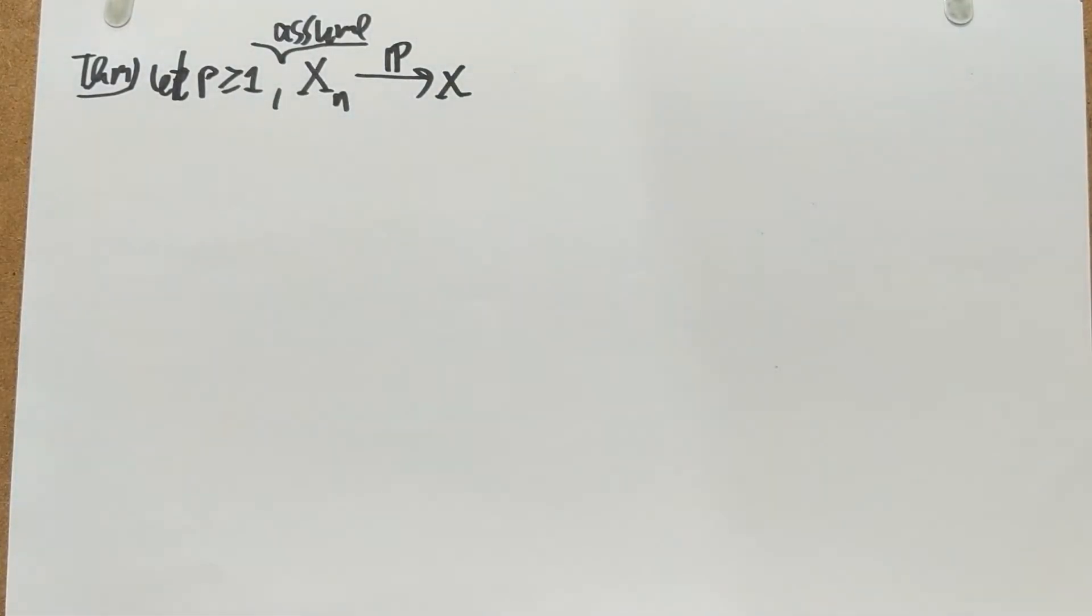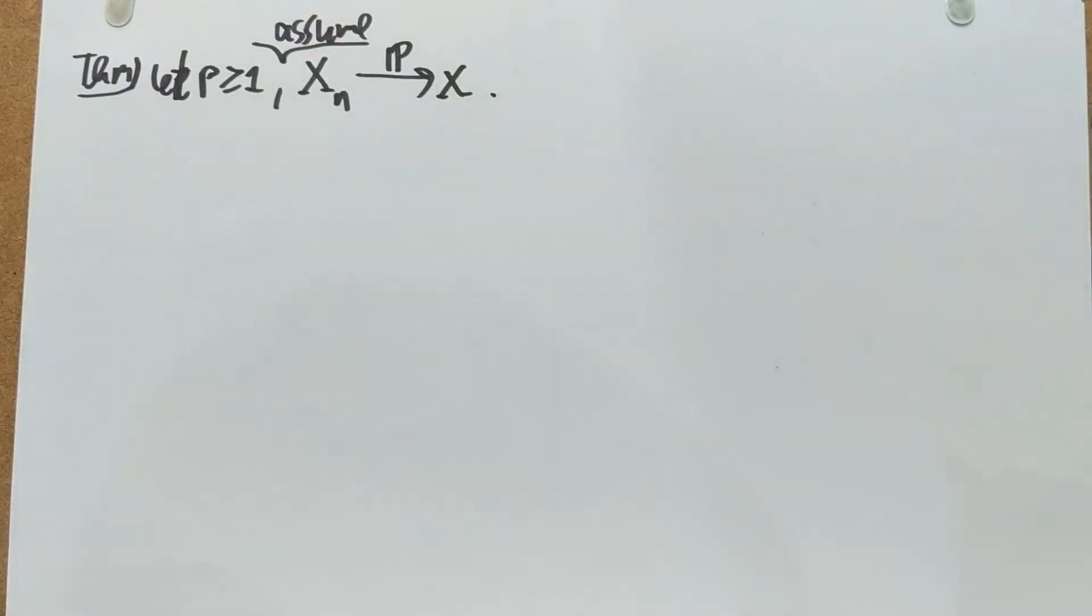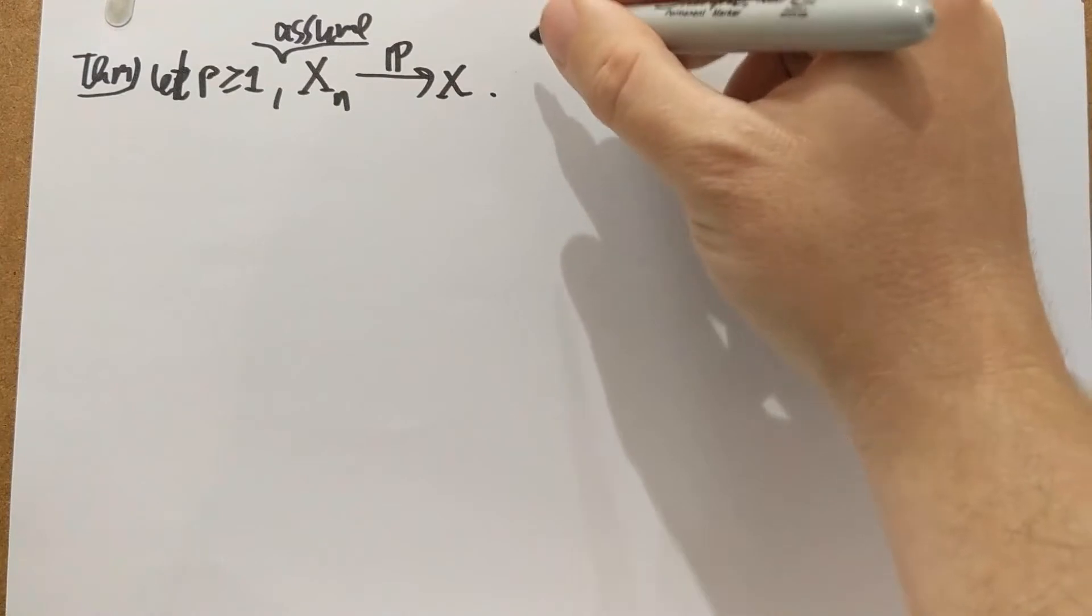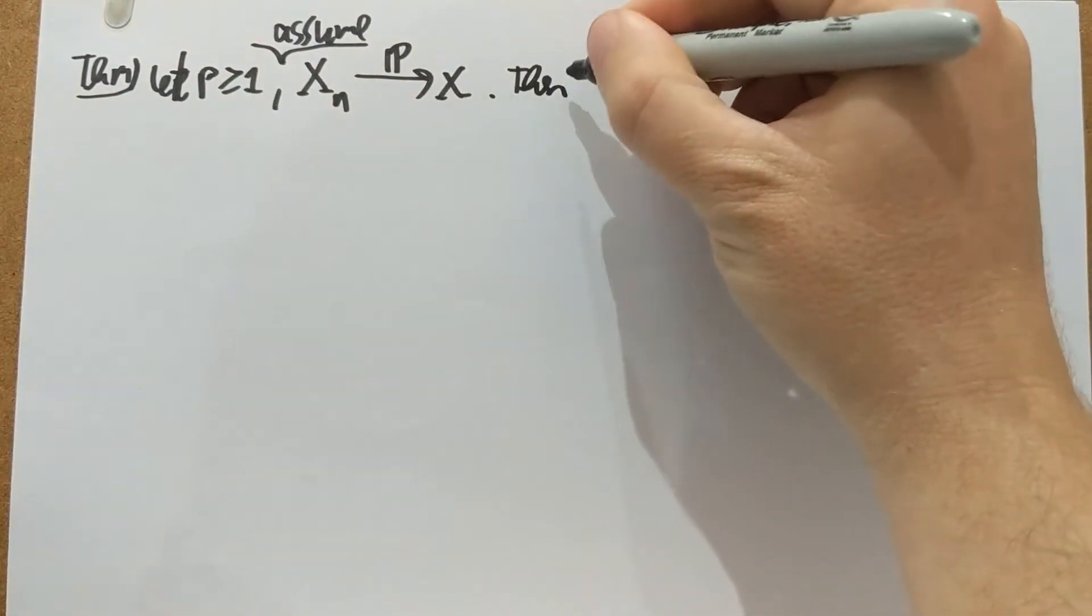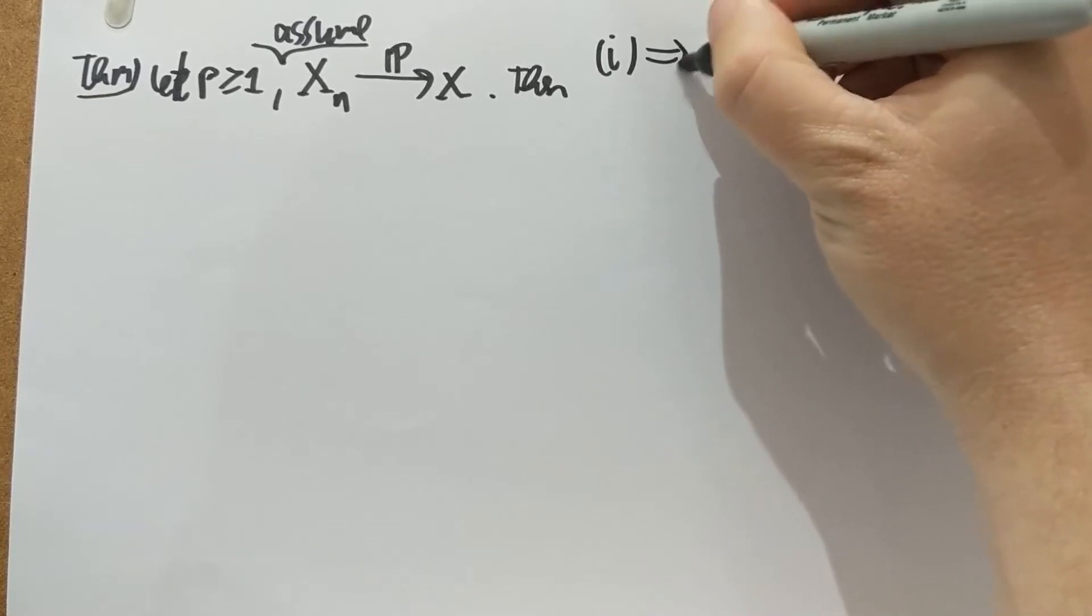Okay, suppose we have convergence in probability of xn to x and we have a p at least one real number, then I'm going to tell you about five statements in a second.